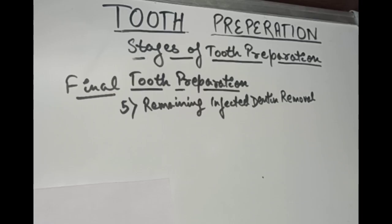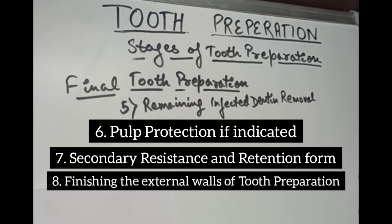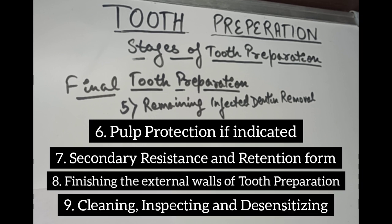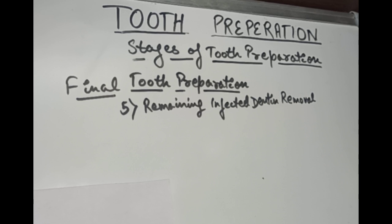Now let's move on to the final stages of tooth preparation. The final stages involve: removal of any remaining enamel, pit or fissure issues, infected dentine, or old restorative materials if indicated; pulp protection if indicated; secondary resistance and retention form; finishing the external walls; and finally cleaning, inspecting, and desensitizing. In the initial preparation, only an initial depth of 0.2 to 0.5 mm is established, so deeper caries are dealt with in this step. If the initial preparation removes all the caries, this step is skipped; otherwise the objective is to remove all infected dentine, pits, fissures, or old restorative materials.